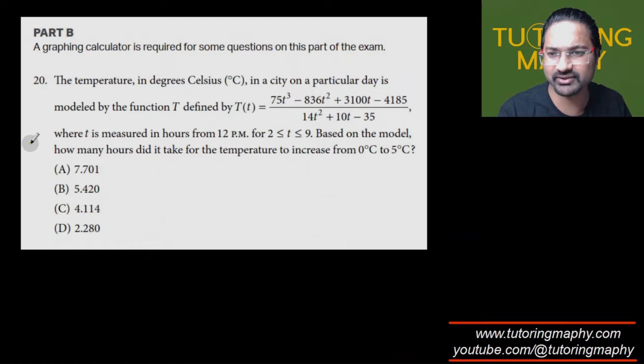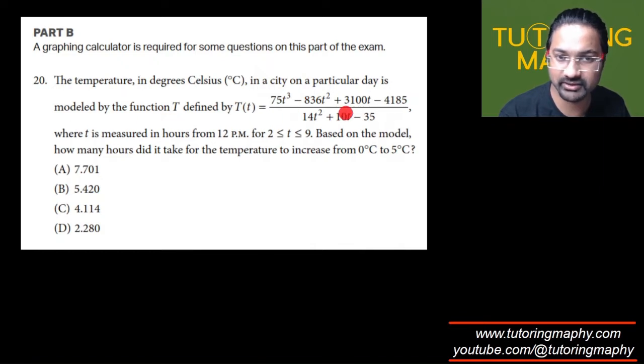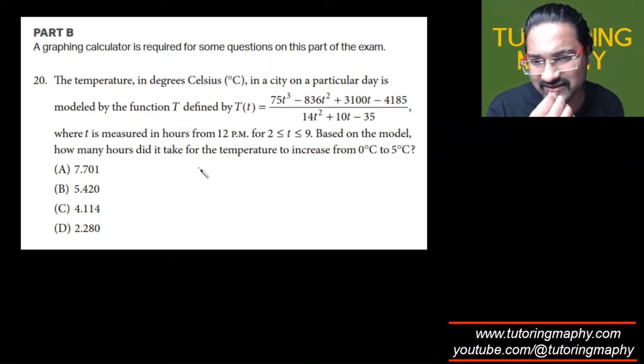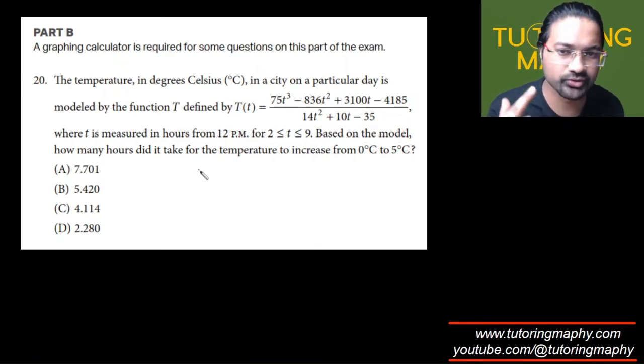This is the last question in this video, based on a graphical calculator. The temperature in degrees Celsius in a city on a particular day is modeled by this rational function, where t is measured in number of hours from 12 p.m., where t can be from 2 to 9. Based on the model, how many hours did it take for the temperature to increase from 0 to 5?